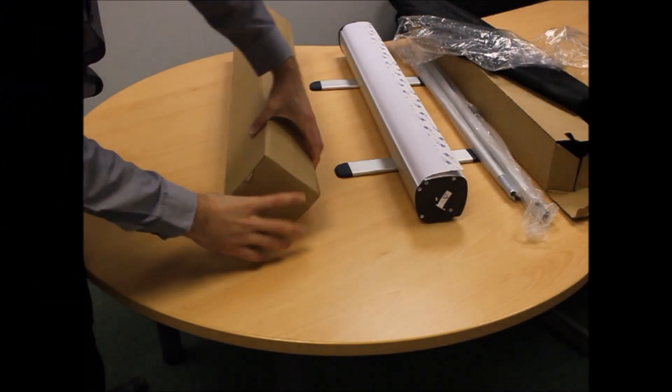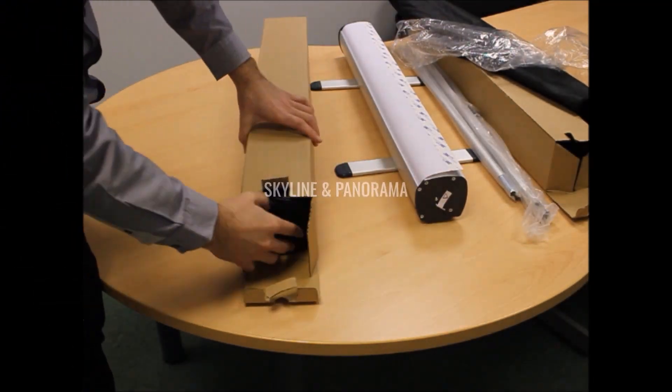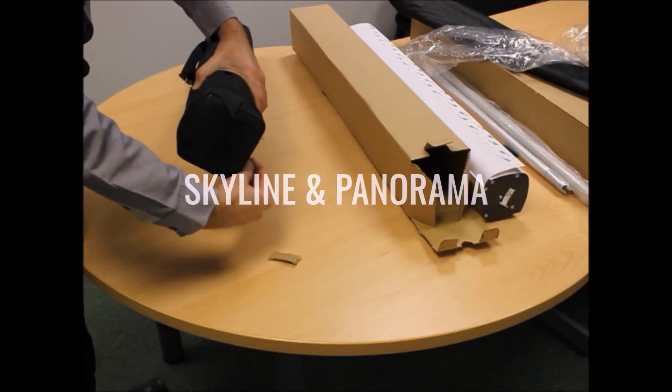The next stand we're showing here is the Skyline and Panorama range. One being the adhesive and the other being the snap rail.